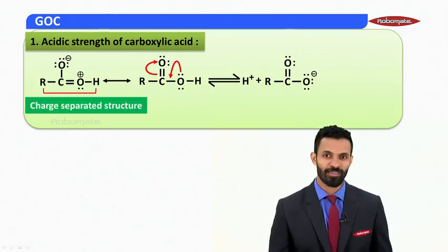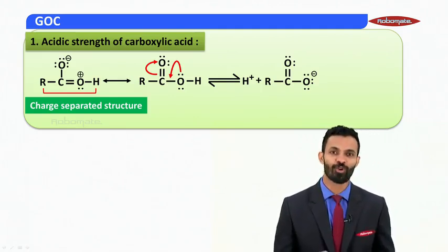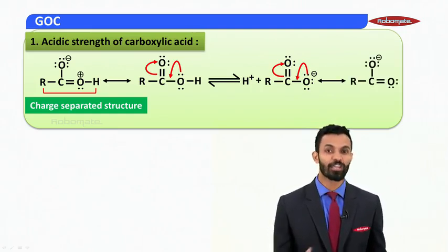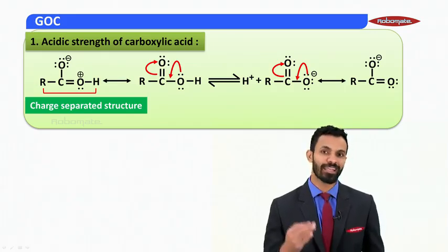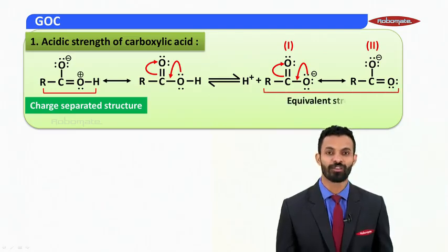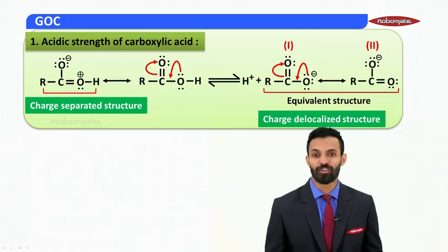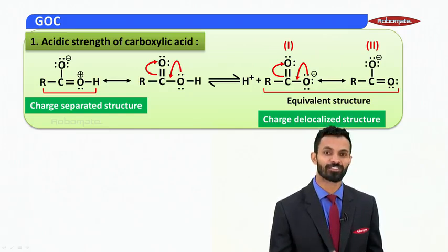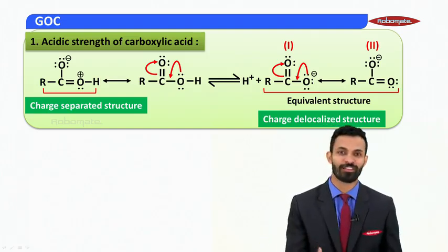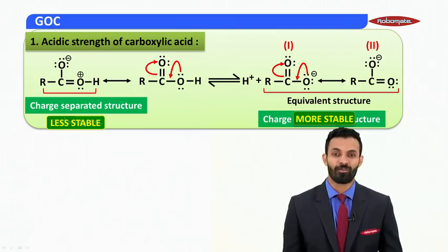This is called a charge-separated structure. Now working on resonance in the carboxylate ion, we again have a lone pair–alternate pi condition. Showing delocalization gives one more equivalent resonating structure, where only the negative charge is getting dispersed and delocalized. These two equivalent structures of the carboxylate ion are charge-delocalized structures. A charge-separated structure is relatively less stable, whereas a charge-delocalized structure — where only one charge is dispersed over several atoms — is always more stable.